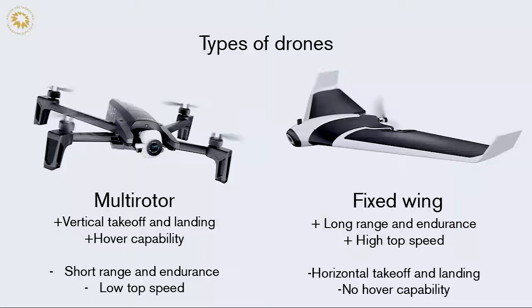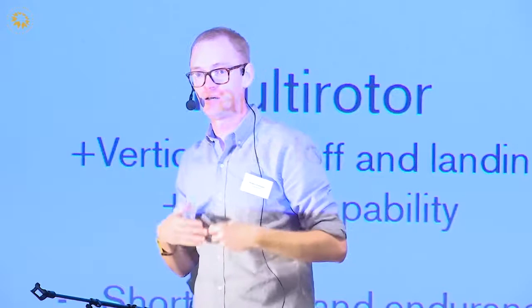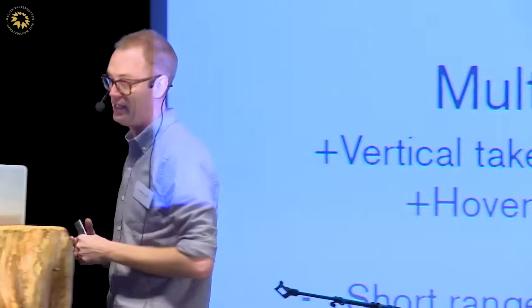So if you look at the market today, there are basically two types of drones. One is called the multi-rotor drone. It's sort of the drone equivalent of a helicopter. It can lift up and land vertically, and it has the capability to hover in place. But it cannot fly very far, and it cannot go very fast.